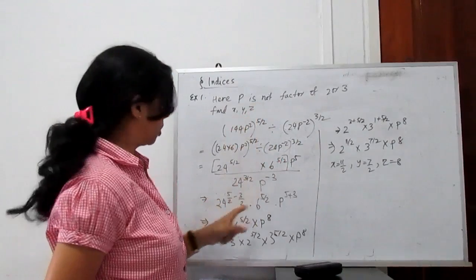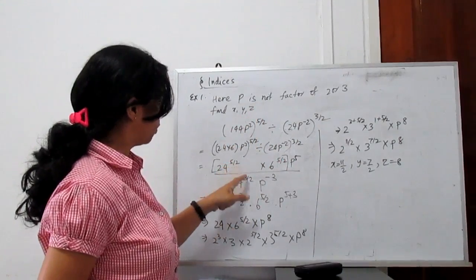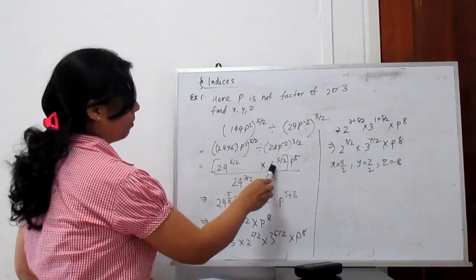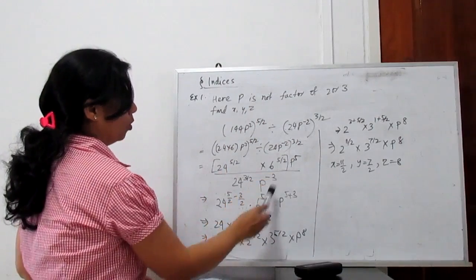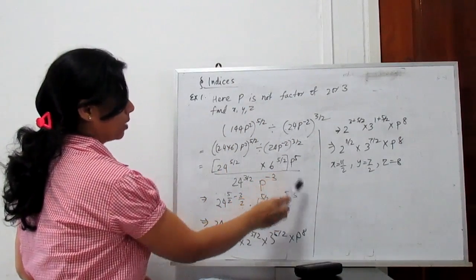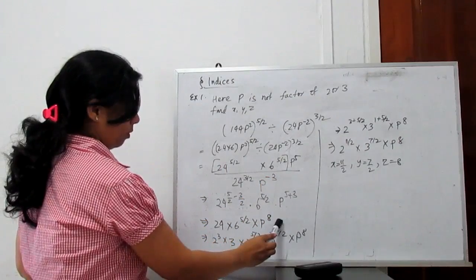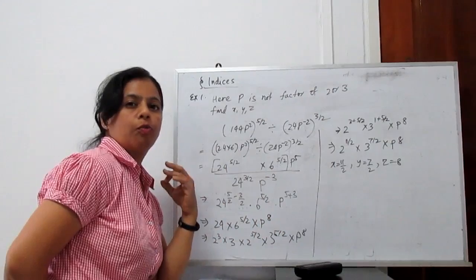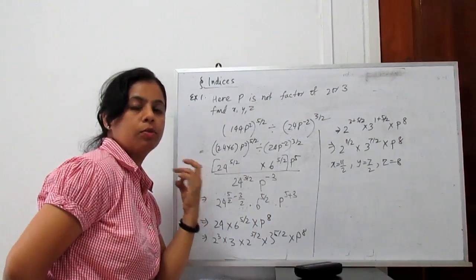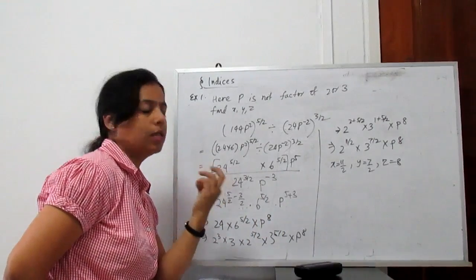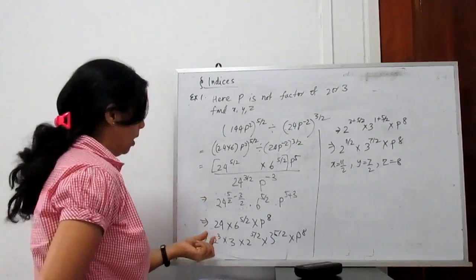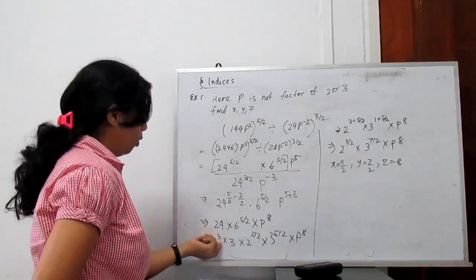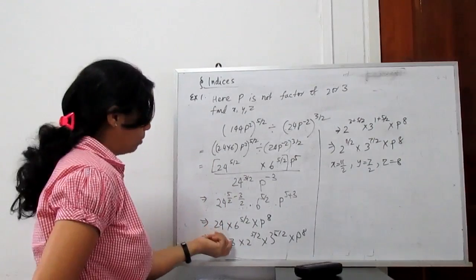Now every term goes to the numerator: 24 to the power 5 by 2 minus 3 by 2, times 6 to the power 5 by 2, times p to the power 5 plus 3. Then factorize into prime bases. 24 equals 8 times 3, which is 2 to the power 3 times 3, and 6 is 2 times 3.